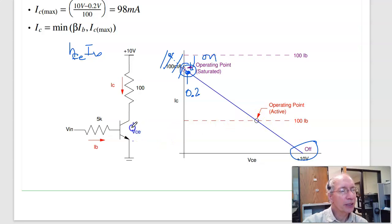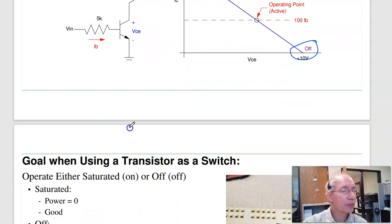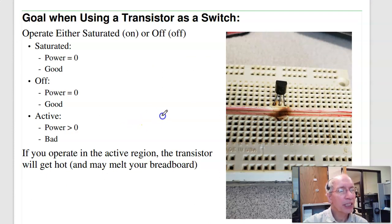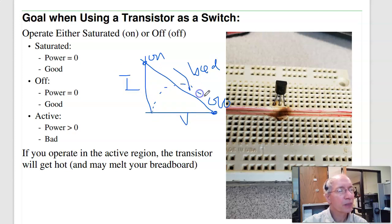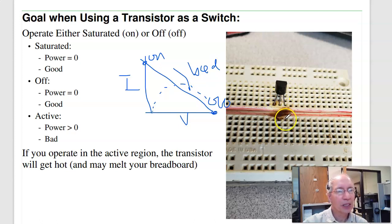The nice thing about operating at the off or saturated points is that power dissipated is essentially zero. Power is volts times amps — at the off point, amps is zero; at saturation, voltage is near zero. So the transistor won't really dissipate any heat. You can use a very small transistor and allow one amp to flow. In the active region, however, power dissipation is at its maximum. If you operate in the active region, the transistor gets hot, there's nowhere to dissipate the heat, and you get a melt spot on your circuit board.